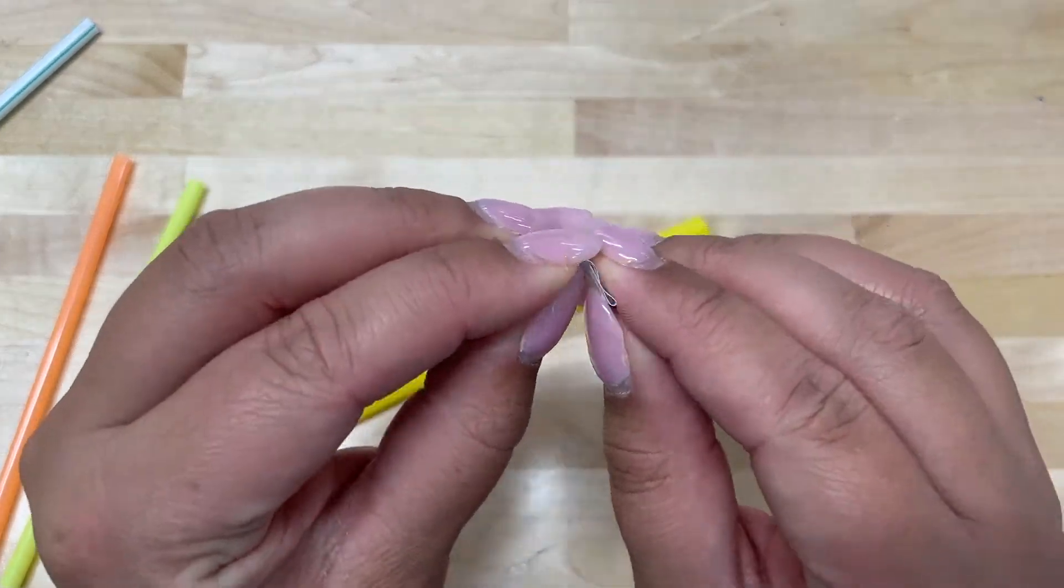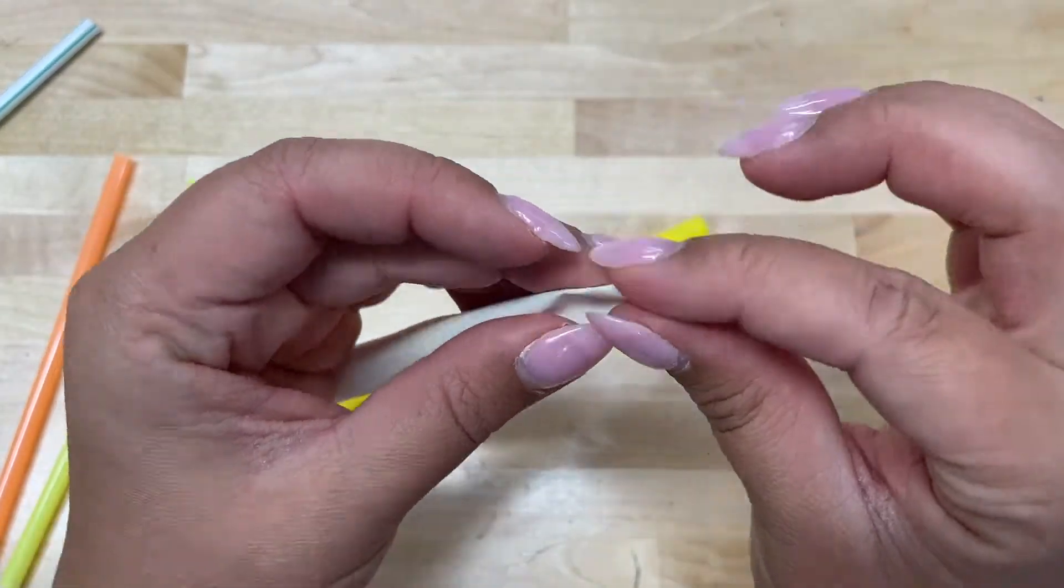Pinch one end of the paper tube you made and tape it shut so no air gets out.